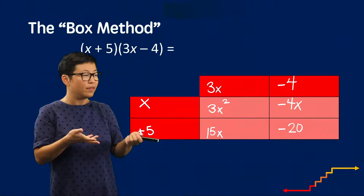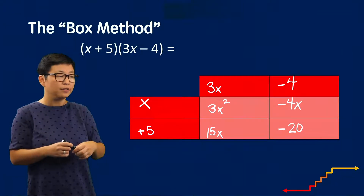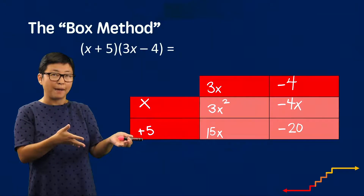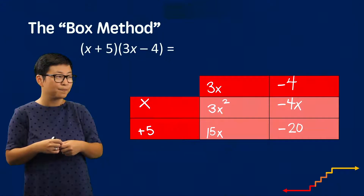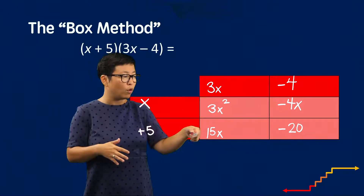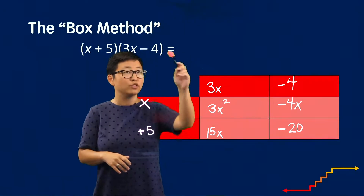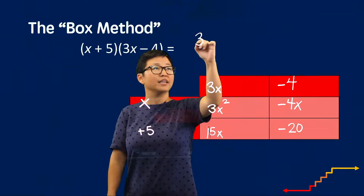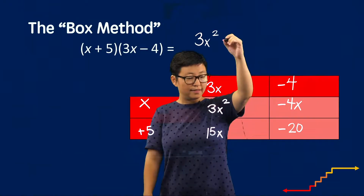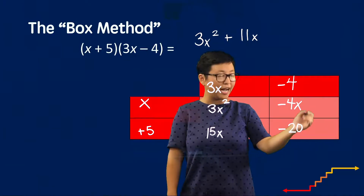Let's look at how this box method really represents the mathematics. If your students have any experience using algebra blocks or algebra tiles, they might notice that each cell represents a piece. This really represents the distributive property because every term is accounted for multiplicatively with other terms in the problem. So now we record the product: 3x², then our x terms — 15x and negative 4x — combine to give 11x, and lastly our integer constant, negative 20.